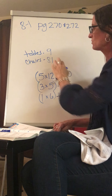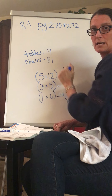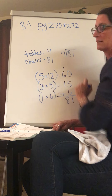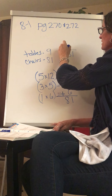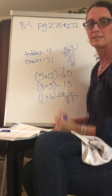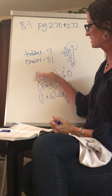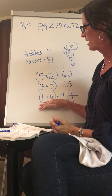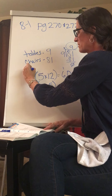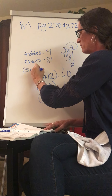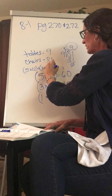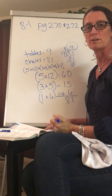If I take those chairs and divide them equally among the nine tables, I have 81 divided by 9. With my math facts I know 9 times 9 is 81. So there were nine chairs at each table. If I wanted to write it as an equation, I would have it side by side: 5 times 12 plus 3 times 5 plus 1 times 6 equals how many chairs.